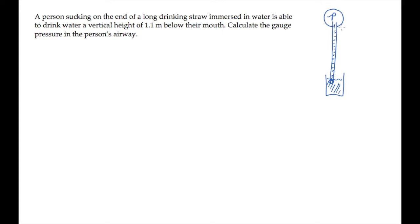The pressure at the base of the straw is atmospheric pressure. We know that the pressure at the base of a column of fluid, p atmosphere in this case, equals the pressure at the top of the column plus rho gh, where rho is the density of water and h is 1.1 meters, the height of the straw.